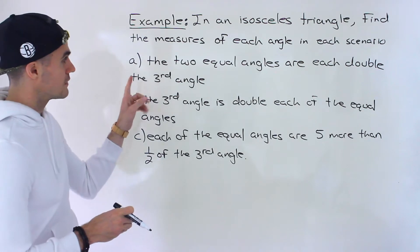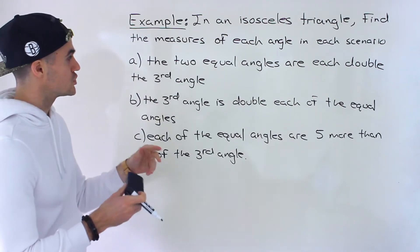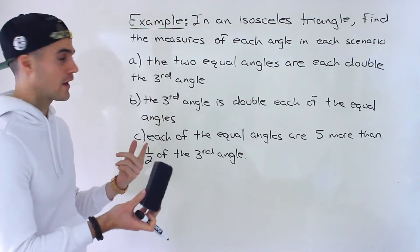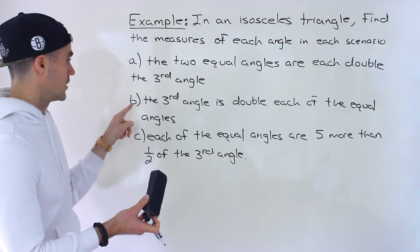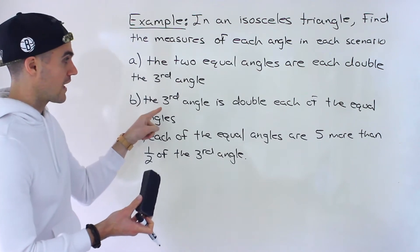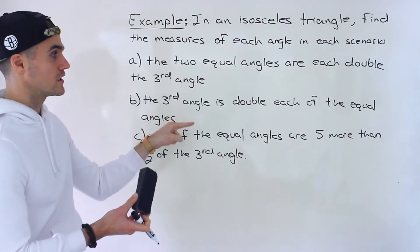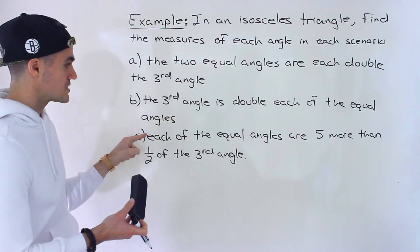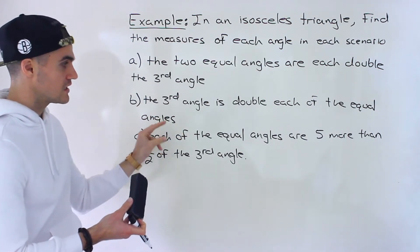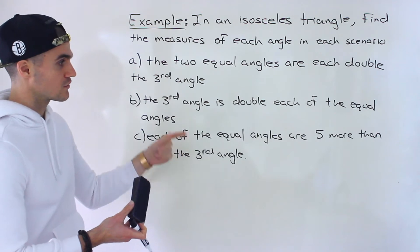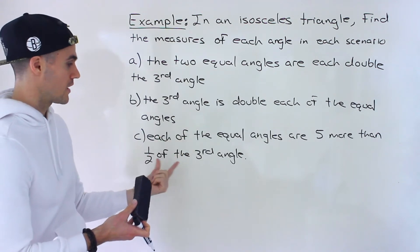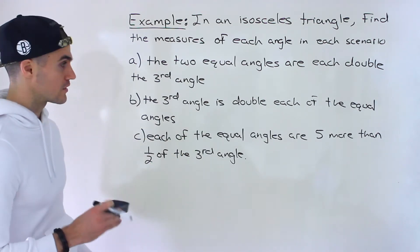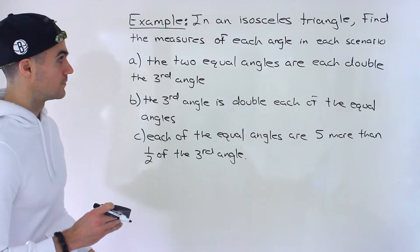In part A, the two equal angles are each double the third angle. Part B, the third angle is double each of the equal angles. And part C, each of the equal angles are five more than one half of the third angle.